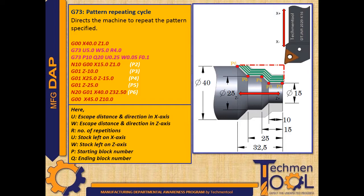Then again, tool movement follows G73 pattern repeating cycle along with P, Q, U, W and F values. U is the stock left on X axis, W is the stock left on Z axis, P is the starting block number, Q is the ending block number, and F is the feed rate.